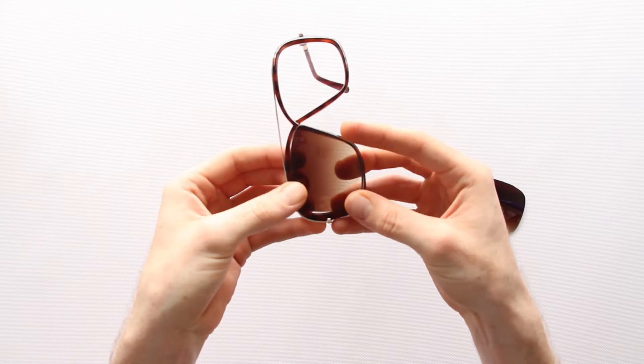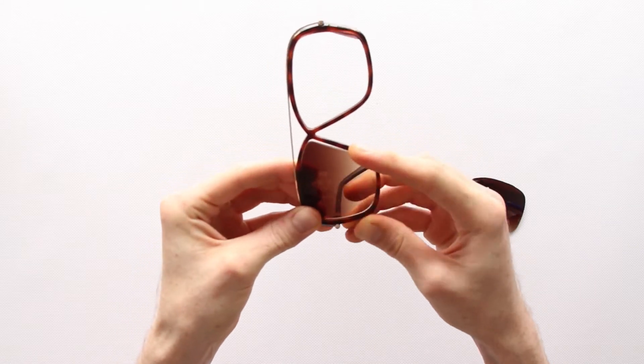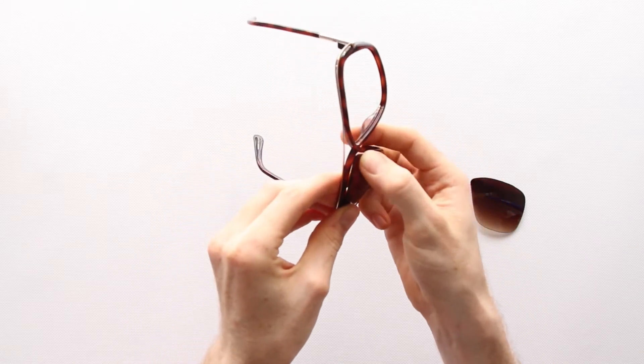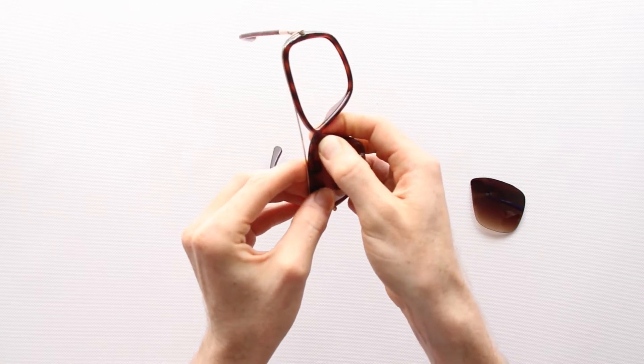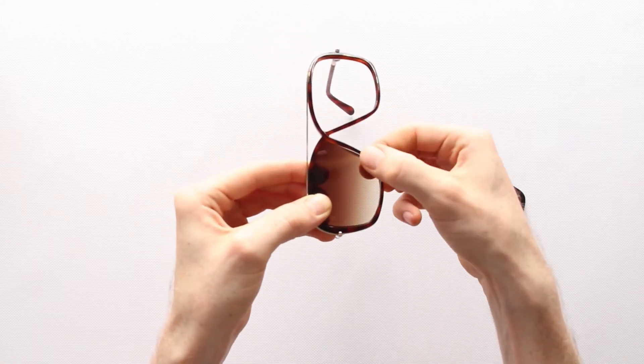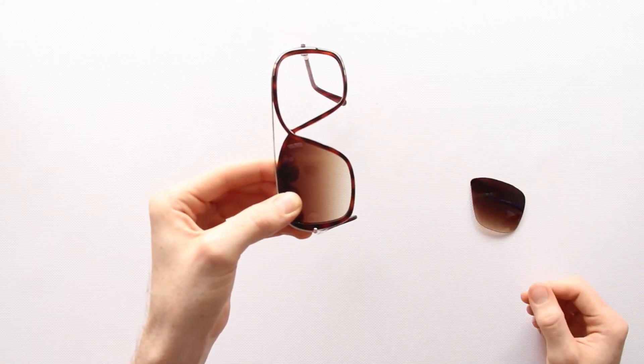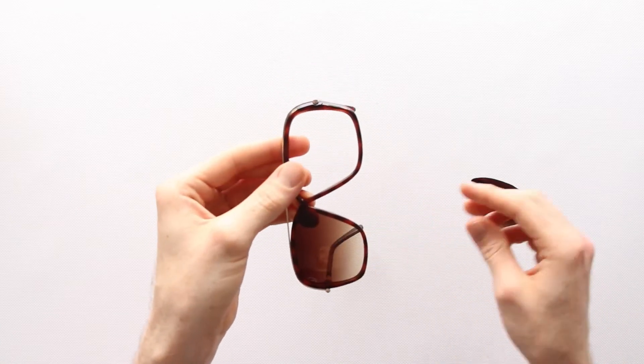Line up the edge of the lens with the frame, inserting the lens on the arm side first. Then use your thumb to work the lens into the nose area and gently pinch any remaining portion of the lens to secure it into the frame.